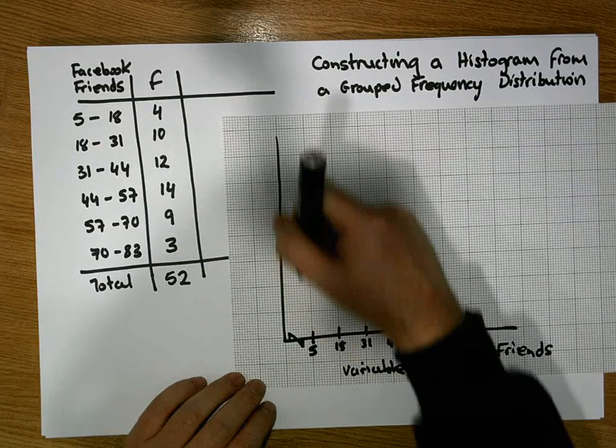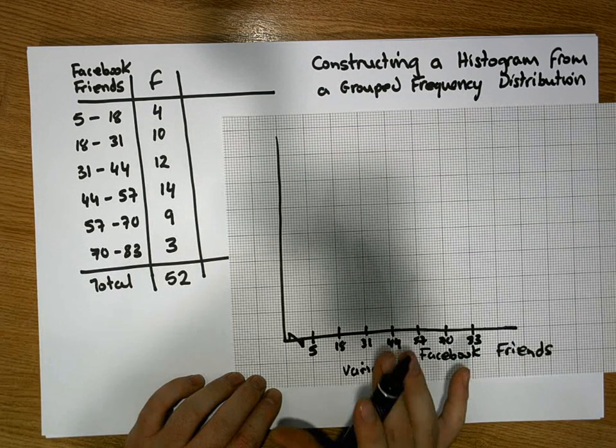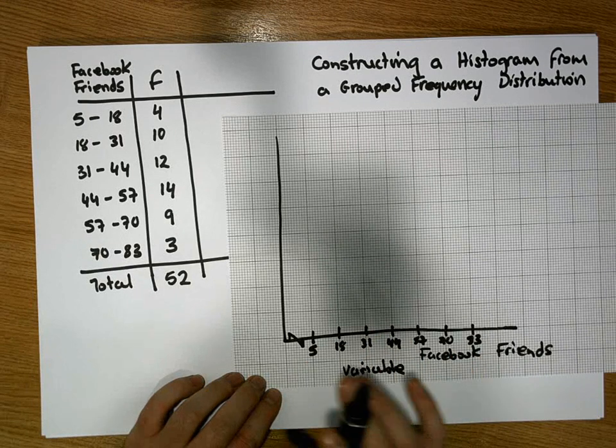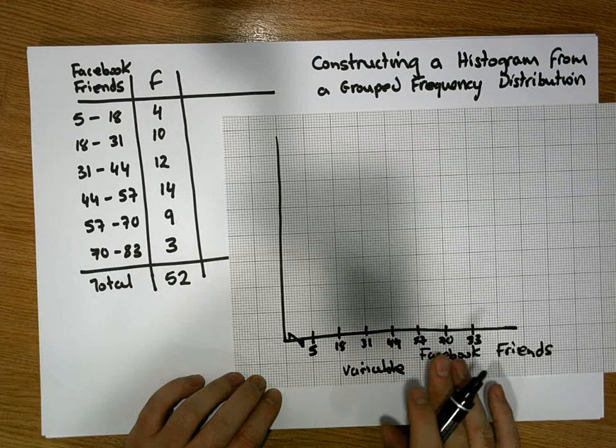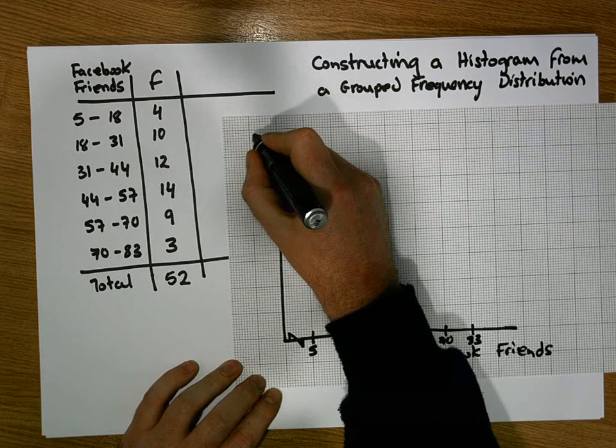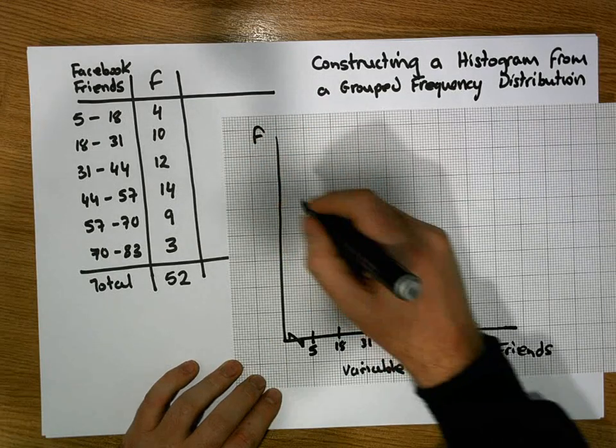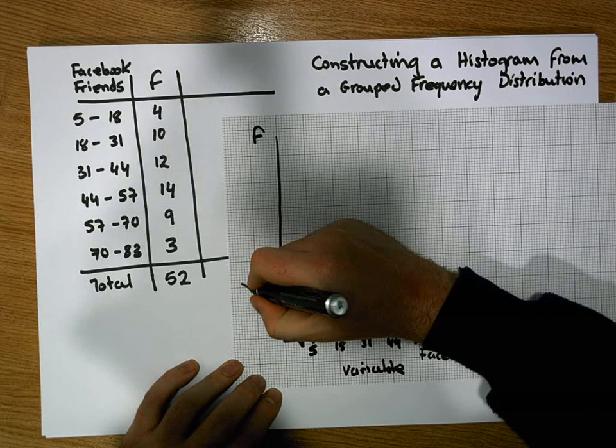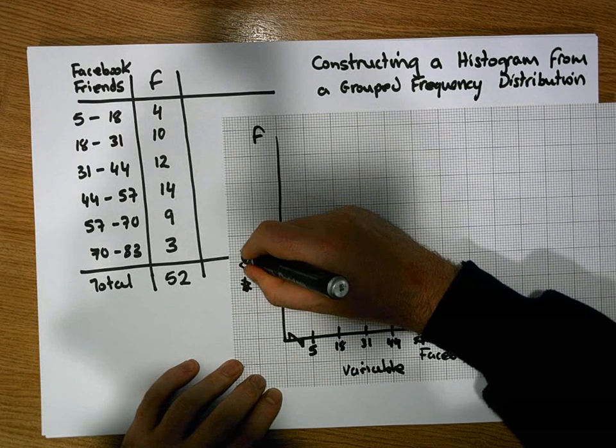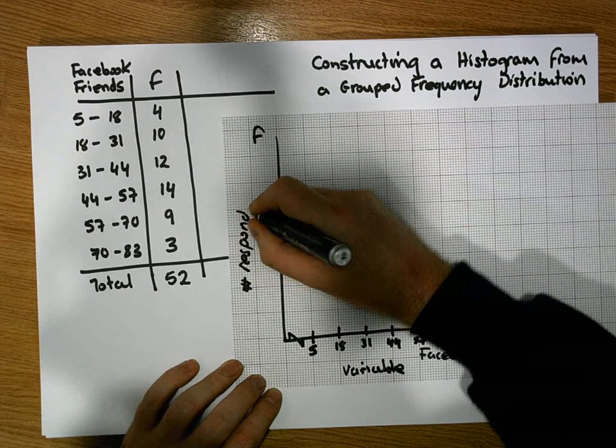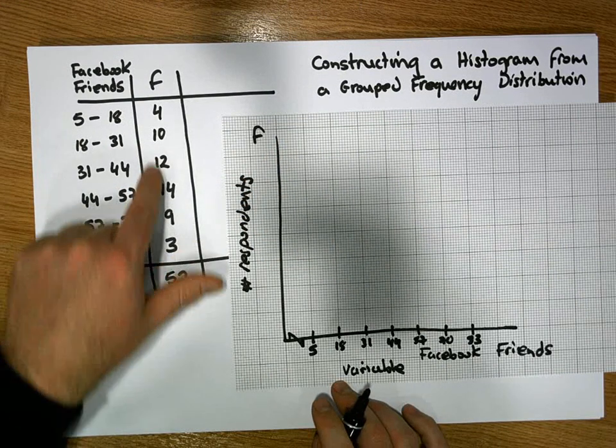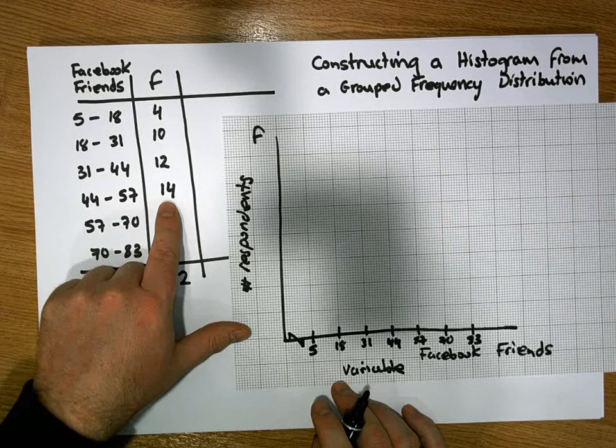The vertical axis represents our frequencies. It doesn't have to represent the raw frequencies. It could represent relative frequencies or percentage frequencies. But for our purposes, it's going to represent our frequencies. So we'll symbolize that by small f, which is the number of people, or the number of respondents. Which is our frequency. And we can see that the maximum number of respondents in any particular interval is 14.